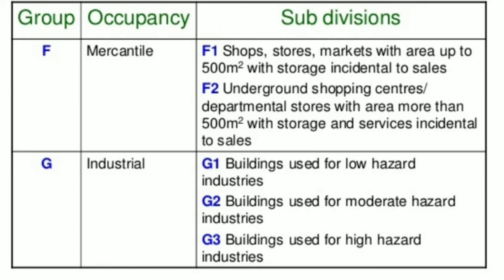F2 category includes underground shopping centers and departmental stores. Group G buildings are Industrial Buildings, subdivided into G1, G2, and G3. G1 buildings are used for low hazard industries, G2 buildings for moderate hazard industries, and G3 buildings for high hazard industries.